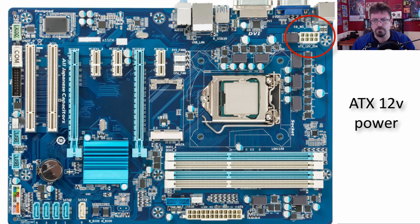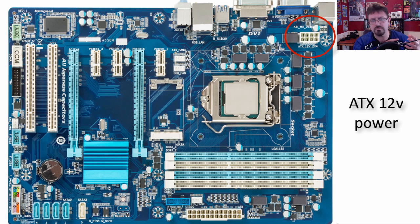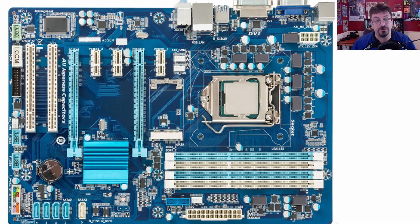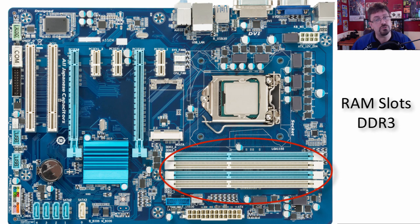Next we see an ATX 12V power connector. Looking back at the power supply from the previous videos, we saw cables and dongles hanging off the power supply that we could plug into different devices — the motherboard itself, the CPU, video cards. This one is an ATX 12V power supply connection. Moving further down, we have the RAM slots — this is where you put your RAM sticks, your memory. This one is a DDR3 type of connection. DDR does not stand for Dance Dance Revolution — we'll get into what it stands for when we talk about RAM in its own lesson.